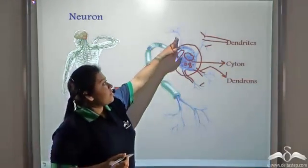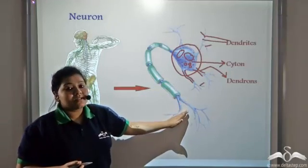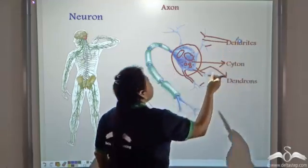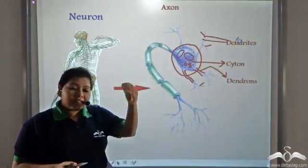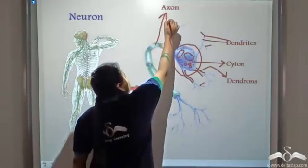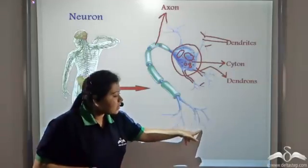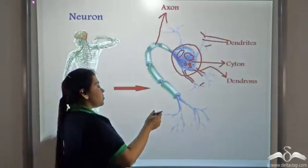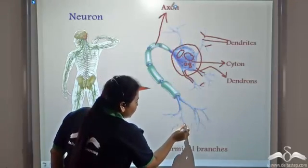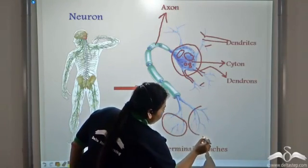Now one such dendron elongates to form this structure. And this structure is known as the axon. So one dendron elongates to form this structure which is known as the axon. Now the axon ends in these terminal branches. So axons end in terminal branches. These are the terminal branches of a neuron.